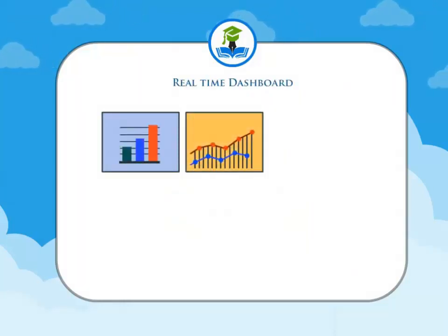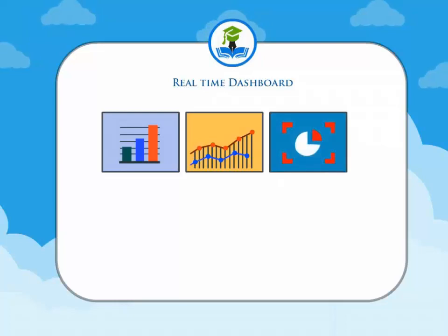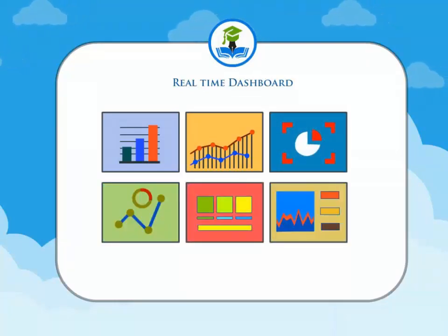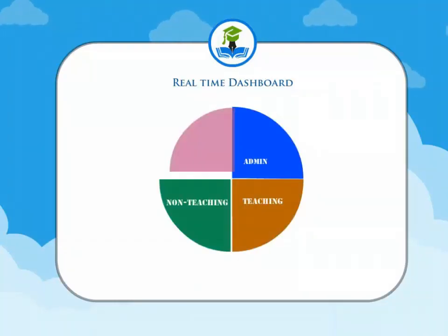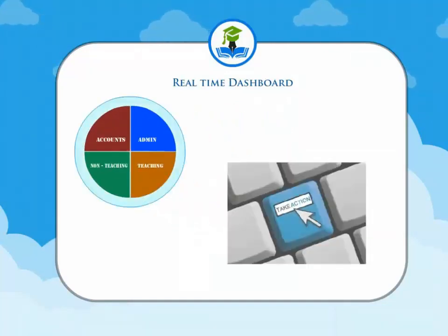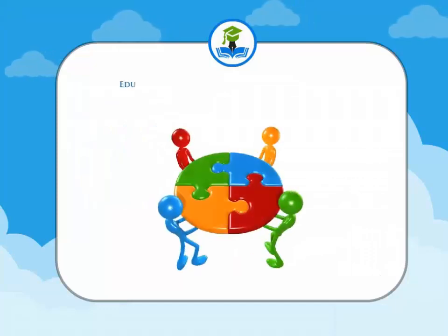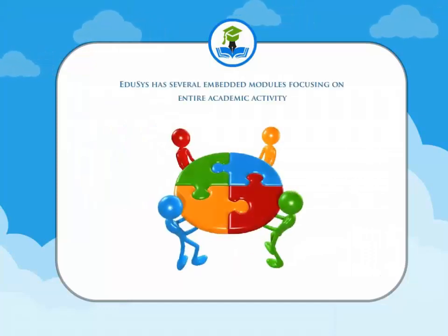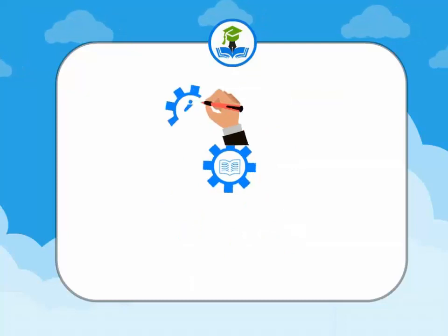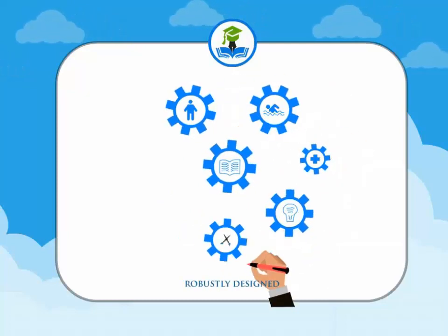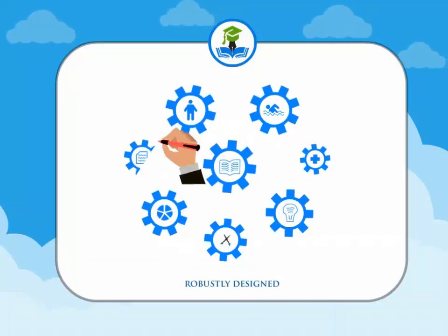Institution senior management can look into several real-time dashboard charts to efficiently manage and monitor department-wise performance, and take timely actions to meet academic achievements. EDUCES has several embedded modules focusing on entire academic activity at the campus, and it is robustly designed in decentralizing the departmental activity.